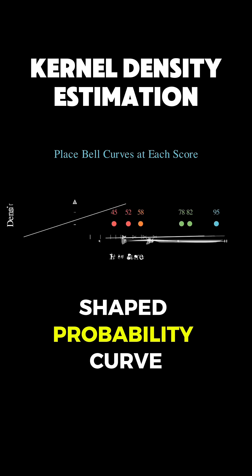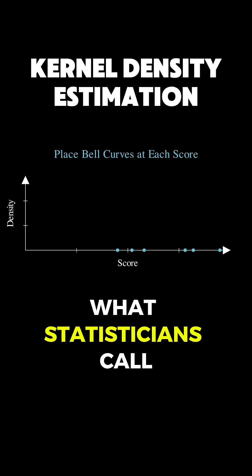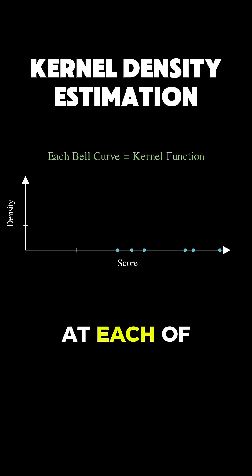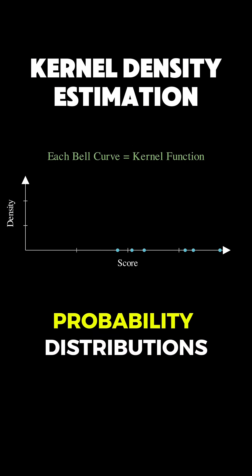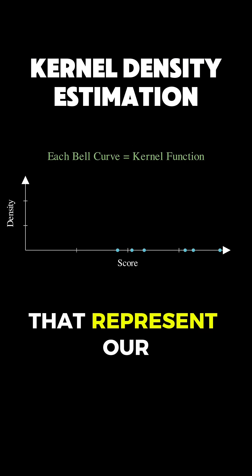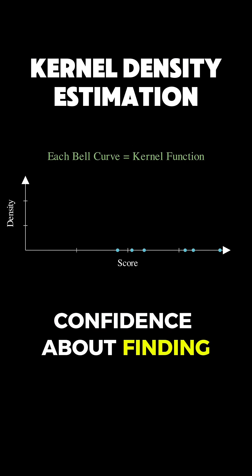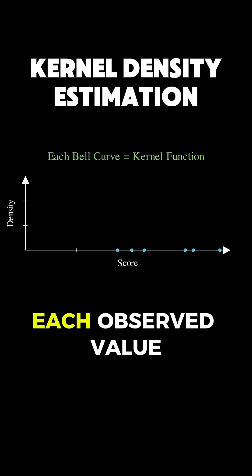We're going to place a bell-shaped probability curve, what statisticians call a kernel, at each of our observed data points, which are carefully constructed probability distributions that represent our confidence about finding students with scores near each observed value.